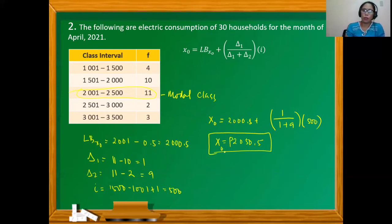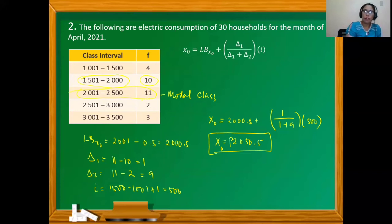This gives us 2050.5 as the modal electric consumption of the 30 households. Note that this value falls between the first and second class intervals, and the third class is the modal class by a difference of only one frequency from the second class, reflecting how close the frequencies are.